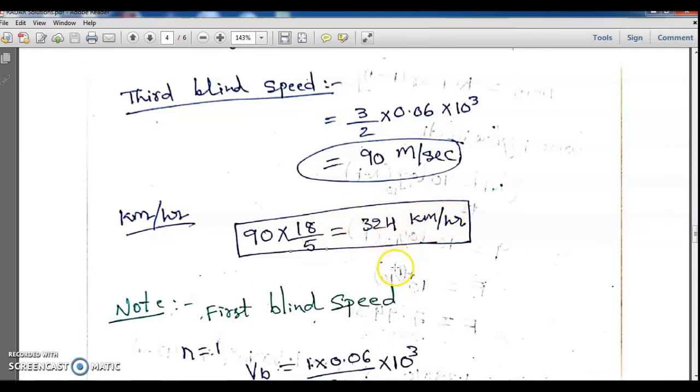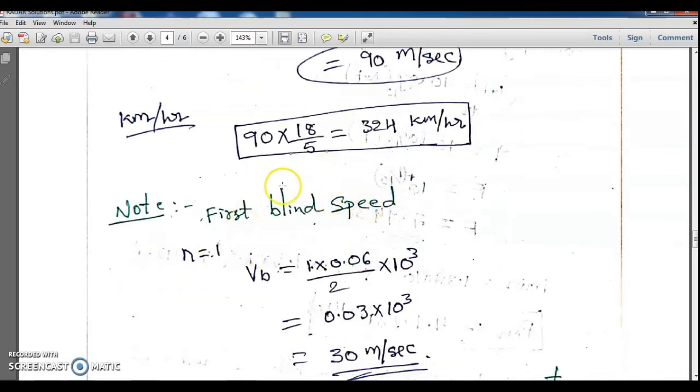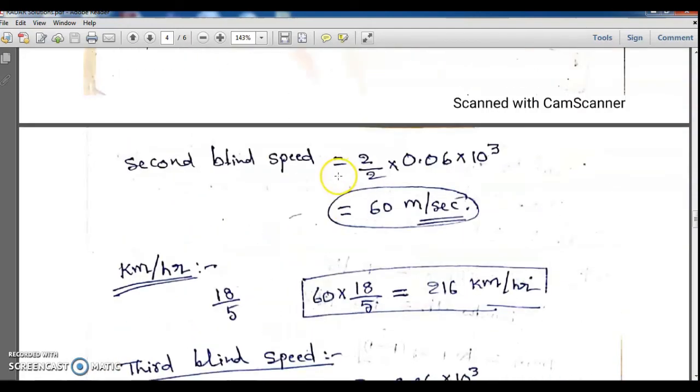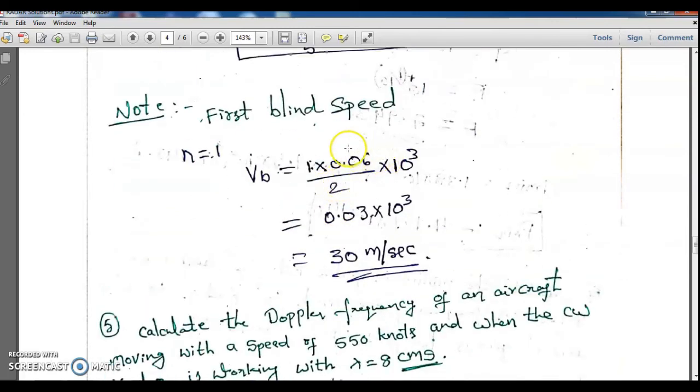If they are asking for the first blind speed, substitute n equals 1. For second blind speed, substitute n equals 2. For third blind speed, substitute n equals 3. This is the first blind speed: when n equals 1, we can get 30 meters per second.